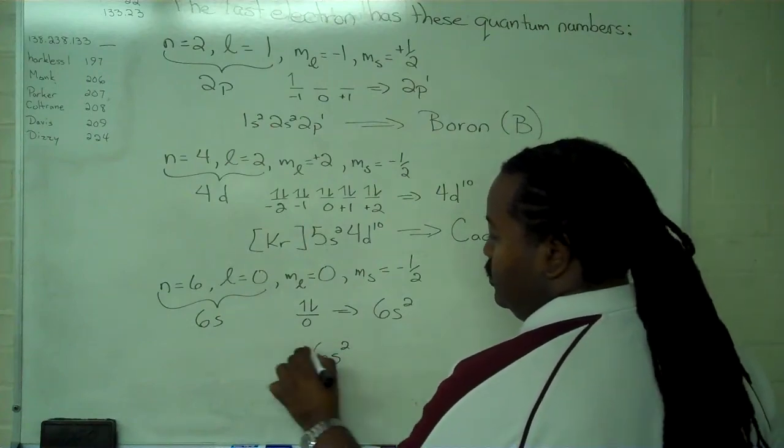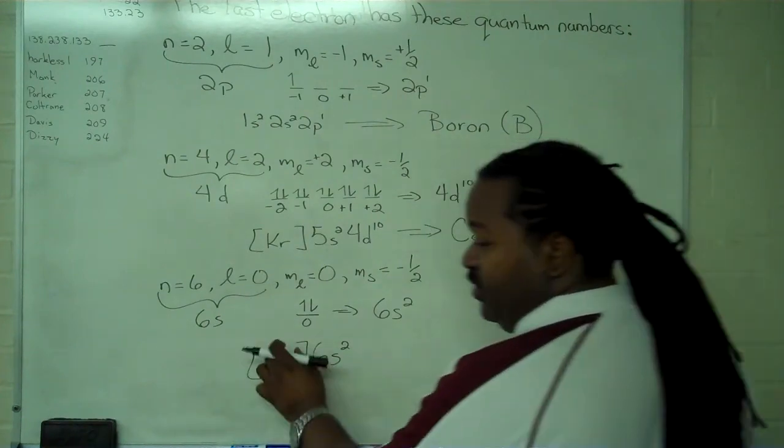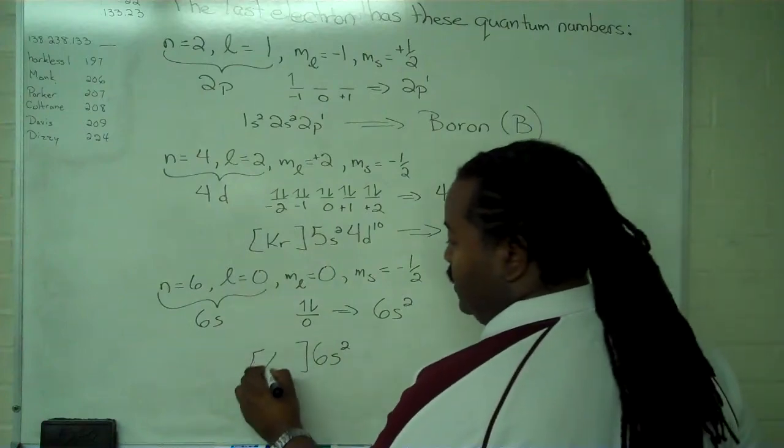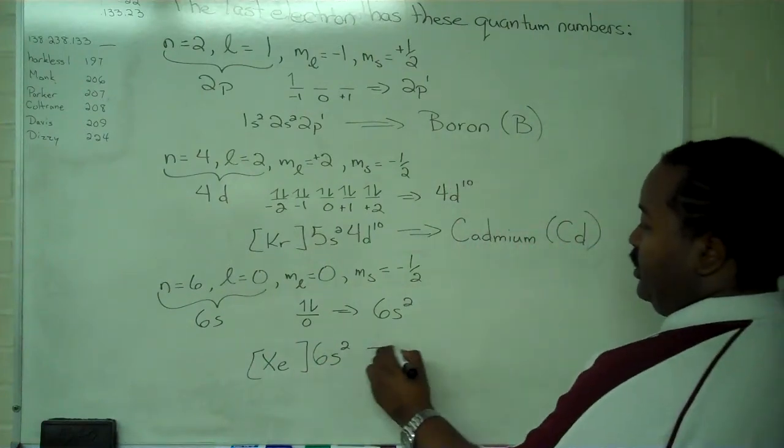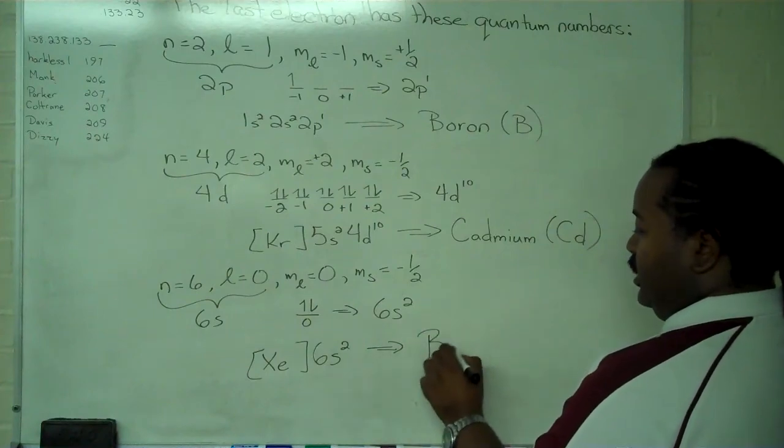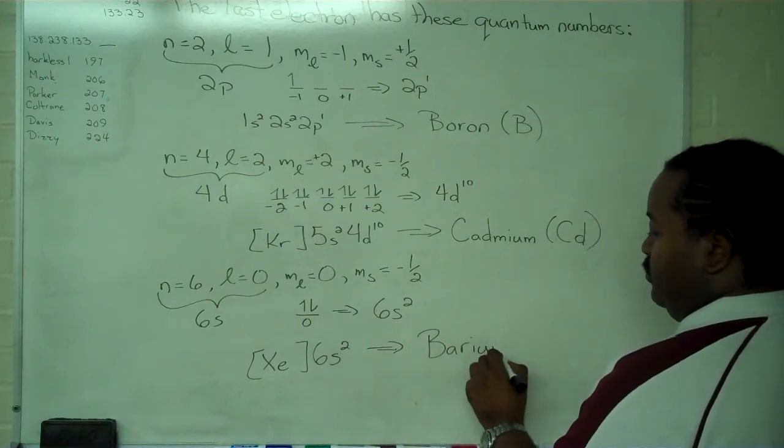By the Aufbau principle, we only have to go back and find our noble gas. In this case, it's xenon. And that implies that we're looking at barium.